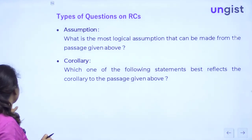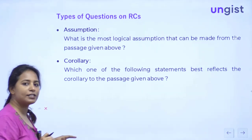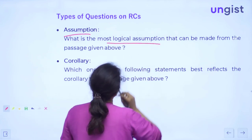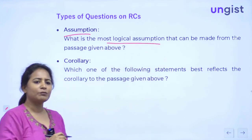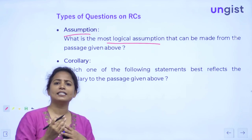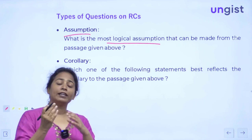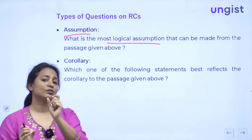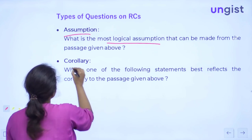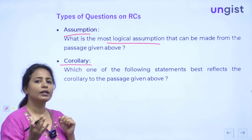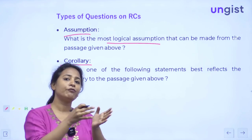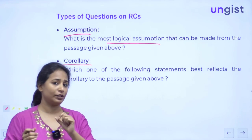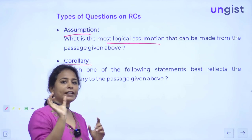Next comes the assumption question — this is a very difficult one. In assumption questions, you are given a situation and a conclusion, and you link both to identify what assumption is being made. Then there is the corollary question. A corollary is something that follows from something else — if a concept is discussed in the passage, what would follow from it? That is a corollary. We will discuss each of these in detail in separate lectures.